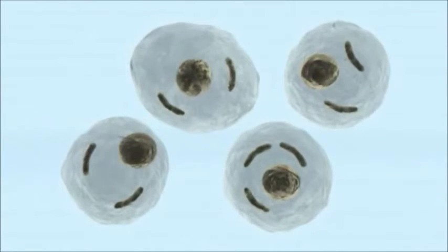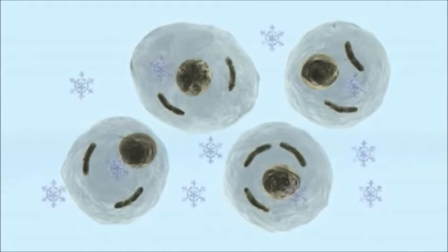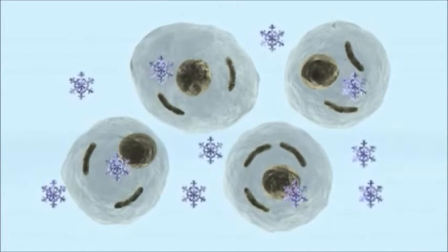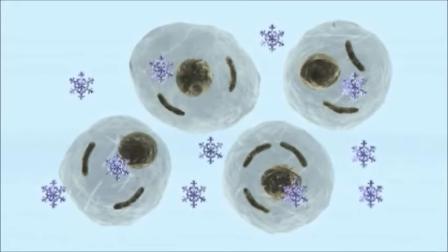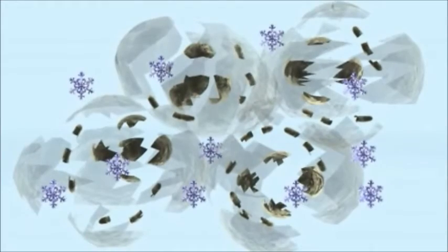Cells have to be frozen in very controlled conditions. A cryoprotectant such as dimethyl sulfoxide or DMSO must be added to stop the cells from becoming destroyed by ice crystals as they form in the freezing process.